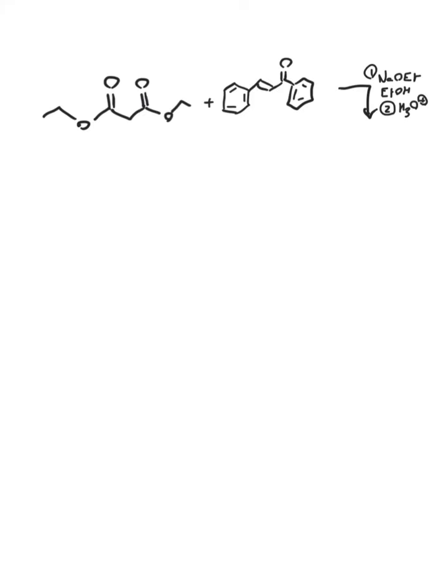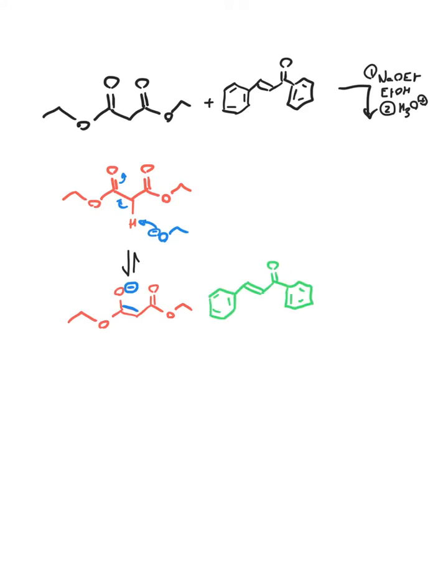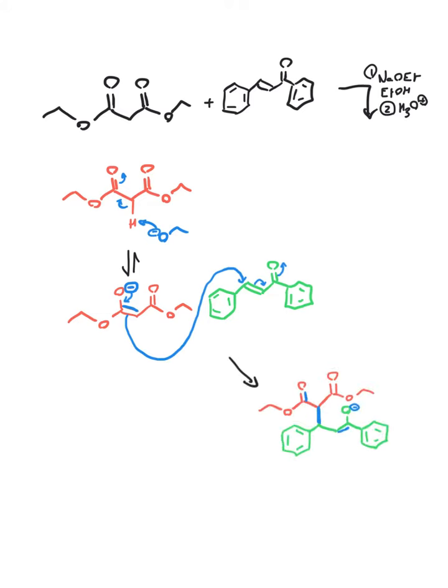Let's go straight to the examples. Here's the first one. We have diethyl malonate reacting with chalcone. The base will deprotonate the malonate to make the enolate, which will then act as a nucleophile and do a Michael addition — a 1,4-addition — after which we add a proton source to reform our ketone.